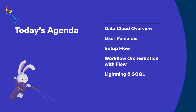Let's get into our agenda today. We'll first start with a Data Cloud overview, giving everyone a take on what Data Cloud is in case you're new to the product, as well as a refresher of our mission. Next, we'll get into the user personas, the different types of users that can work with Data Cloud, what comes out of the box, and how admins can adjust to it. We'll also briefly walk you through the setup flow, then get into Flow, and finally show you what you can do with Data Cloud in your Lightning record page and using SOQL.